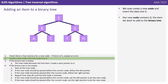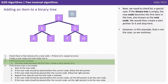We now create a new node and insert the data into it. Our new node contains D, the item we want to add to the binary tree. Next we need to check for a special case. If the binary tree is empty, the new node becomes the first node in the tree, also known as the root node. We would then create a start pointer to it and stop here. However, in this example that is not the case so we continue.